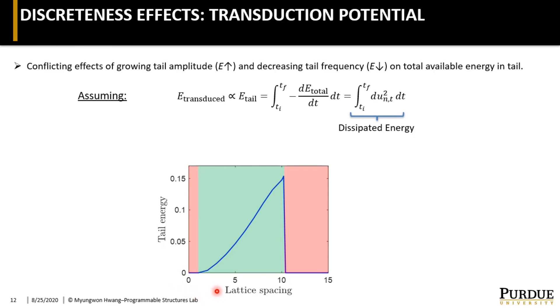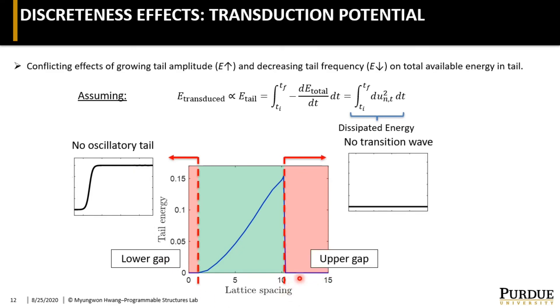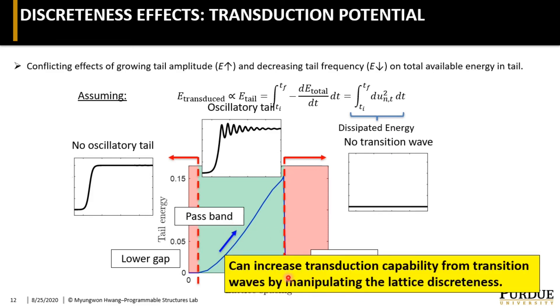Here we notice that there is a lower performance gap as we approach the continuum limit due to the vanishing of the oscillatory tails, and there is also an upper performance gap as it becomes strongly discrete due to the disintegration of the transition waves itself. In between is the pass band, and we observe a monotonic increase in transduction capability. And it shows that we can manipulate the transduction potential through lattice discreteness.